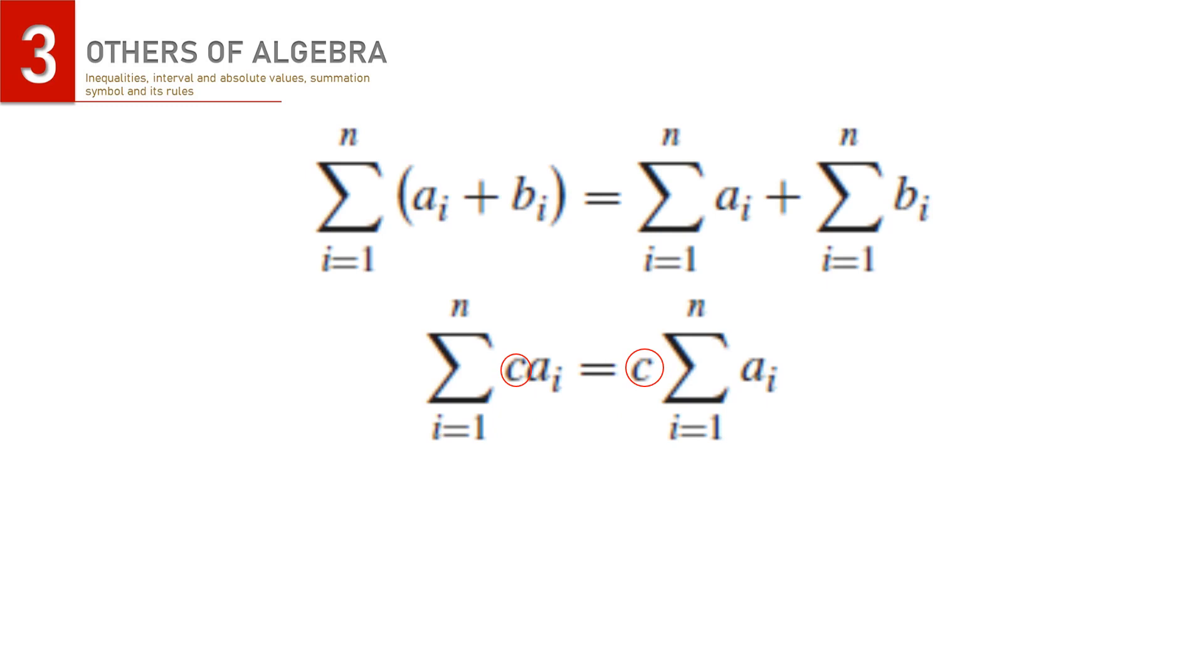The homogeneity property states that the constant factor c can be moved outside the summation sign. And if a_i happens to equal 1 for all i, then the summation is just the multiplication of the constant. We have number of a, which is n here.